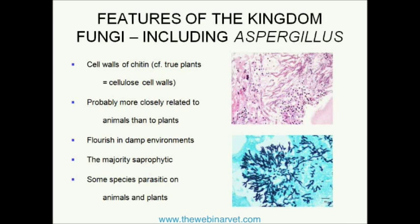Let's look at Aspergillus and fungi more closely. The first key point is that fungi, including Aspergillus, have cell walls made up not of cellulose like true plants — like grasses, lucerne, and cereals — but made up of chitin. Chitin is the substance found in arthropods, invertebrates, insects, spiders, crustaceans, and so on — that tough exoskeleton which has contributed to their success. So we have this strange situation where fungi appear to be like plants, but in fact they are more like animals in terms of their cellular structure, and they are probably more closely related to animals than to plants.